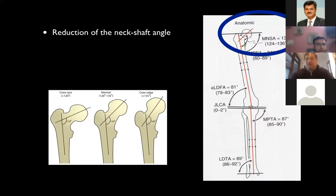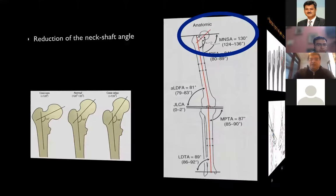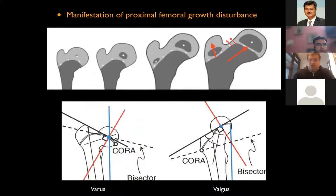Any reduction in the neck shaft angle is coxa vara — but that is too simplistic. Saying anything below 120 degrees is coxa vara is just one aspect, not the full picture. To understand coxa vara, we need to see how the proximal femur develops embryologically. It is one single physis extending from the medial aspect of the femoral neck right up to the trochanter, unlike in the adult bone where we see two distinct physes.